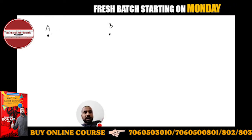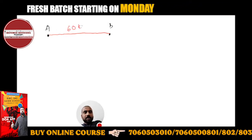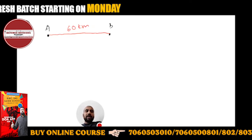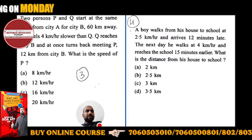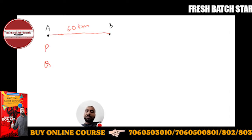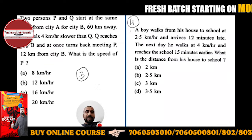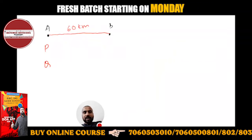The distance between them is 60 kilometers. Now P and Q start at the same time from city A. Both are going towards B, and they started at the same time, suppose at 8 a.m. in the morning.